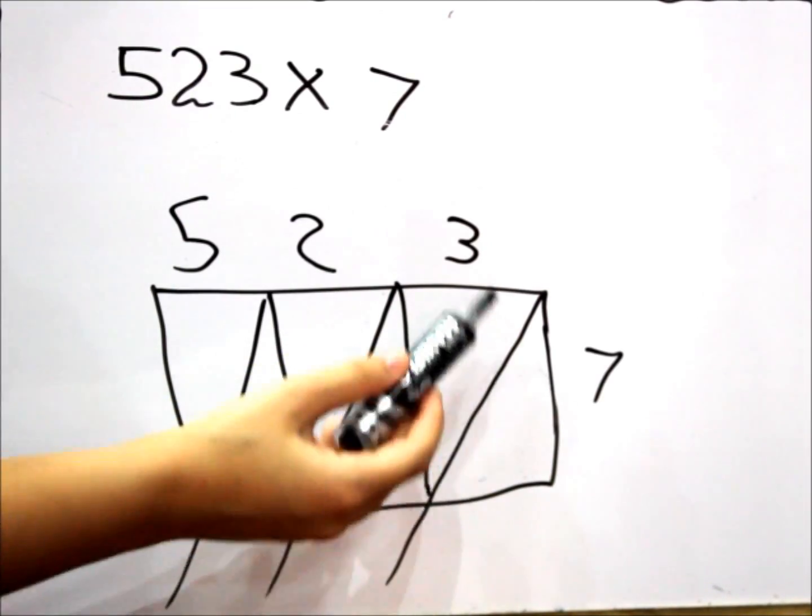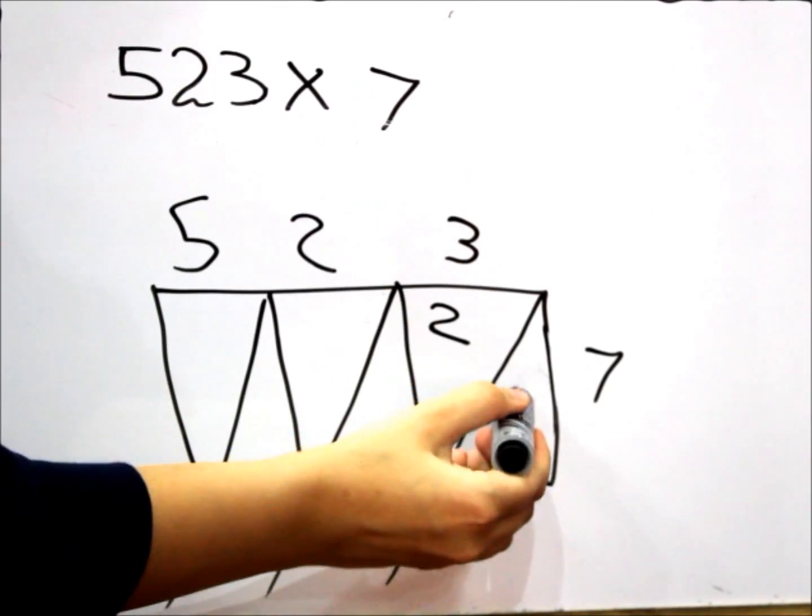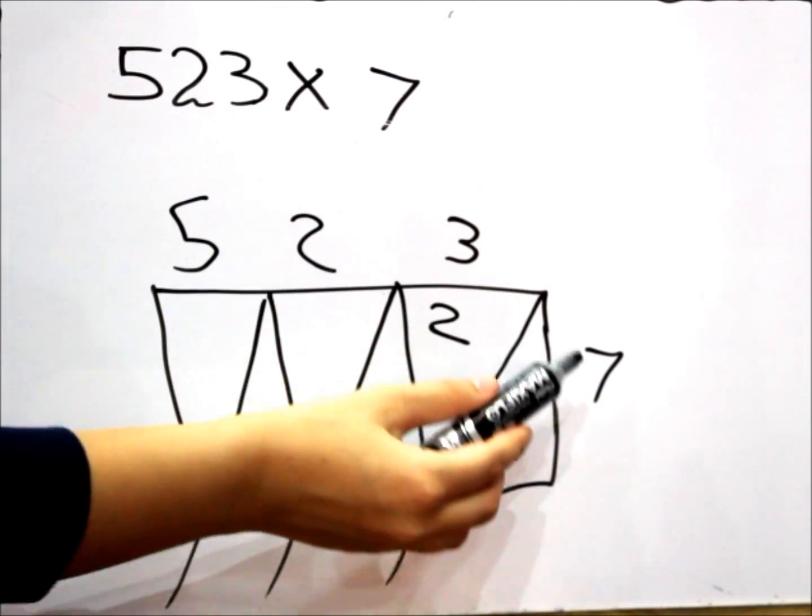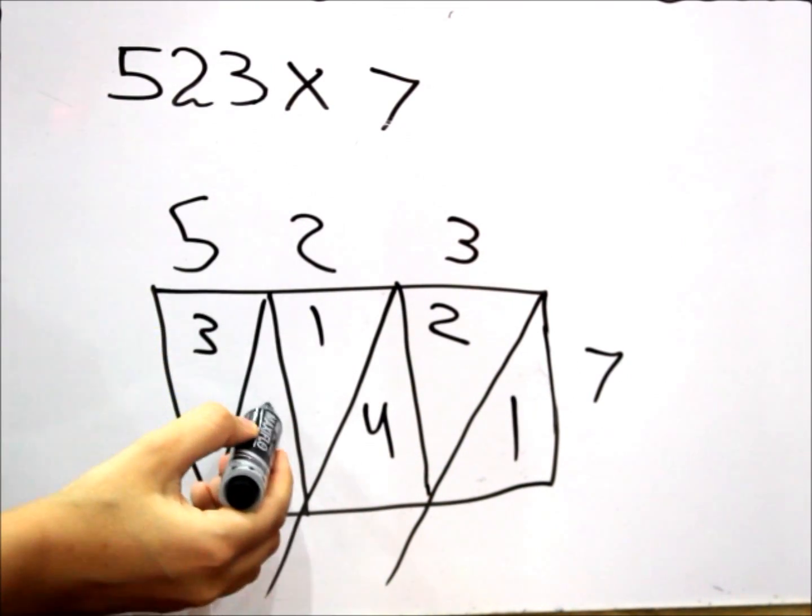For example, we'll take the first square, and that would be 3 times 7, and that's 21. Same thing with the two. 7 times 2 is 14. 7 times 5 is 35.